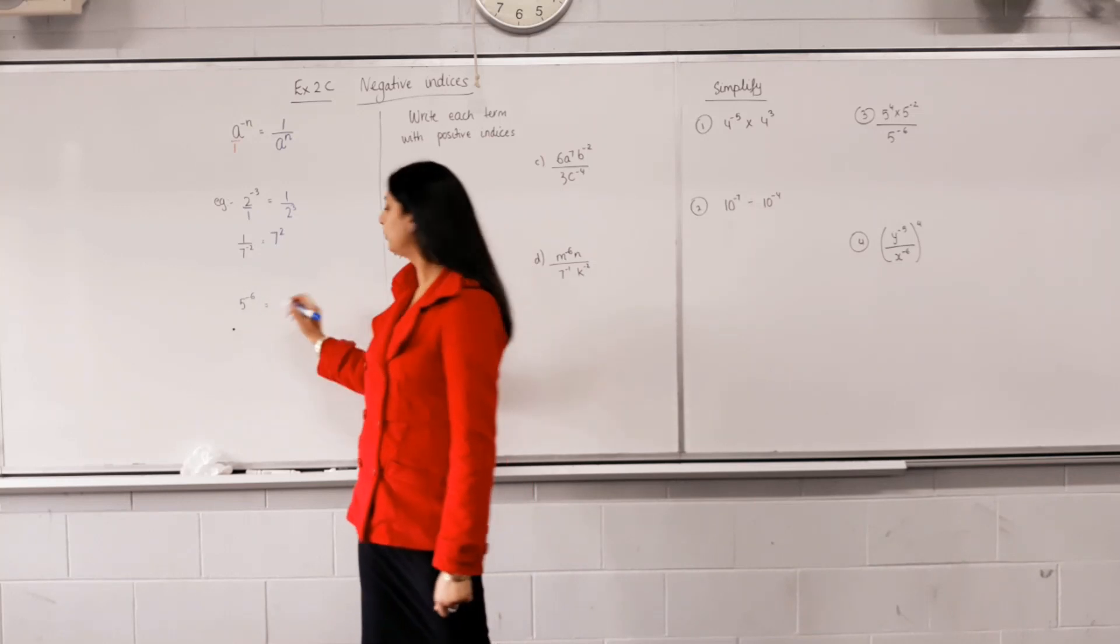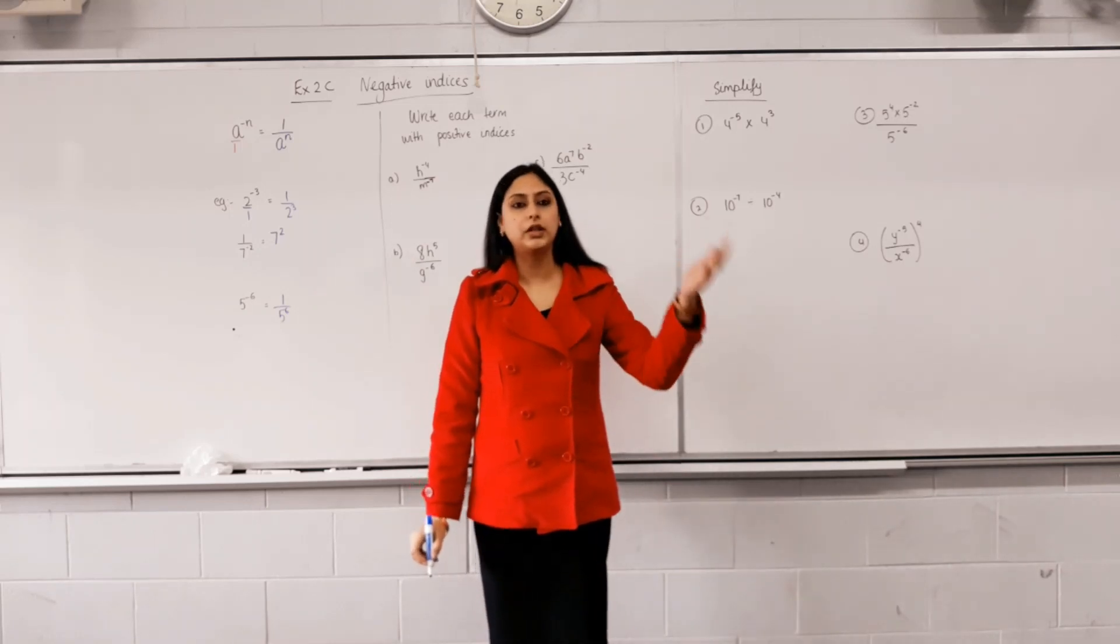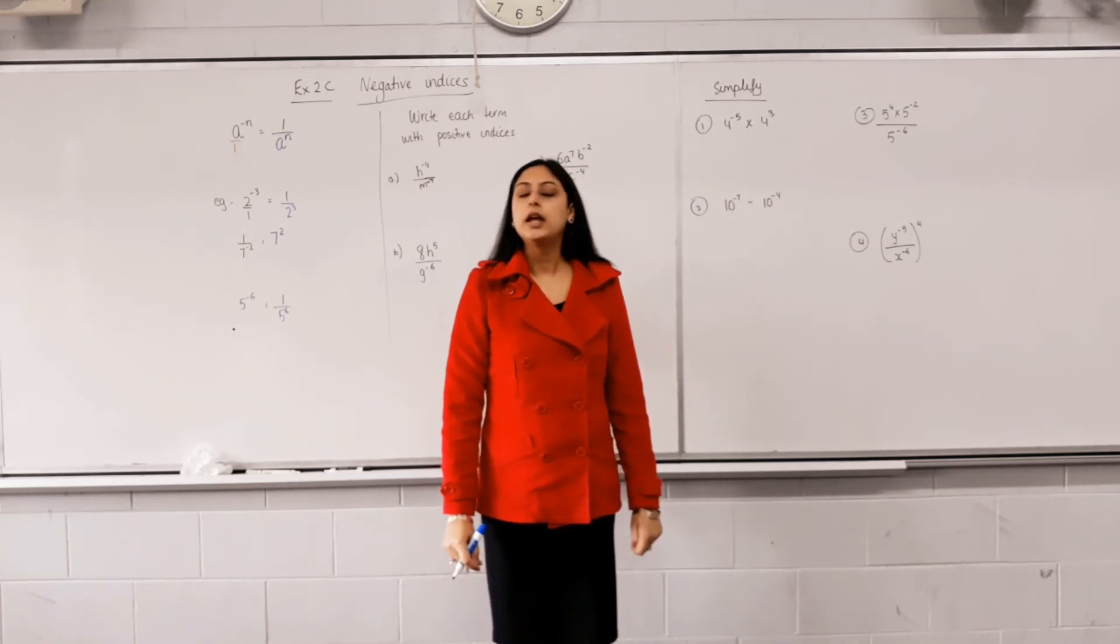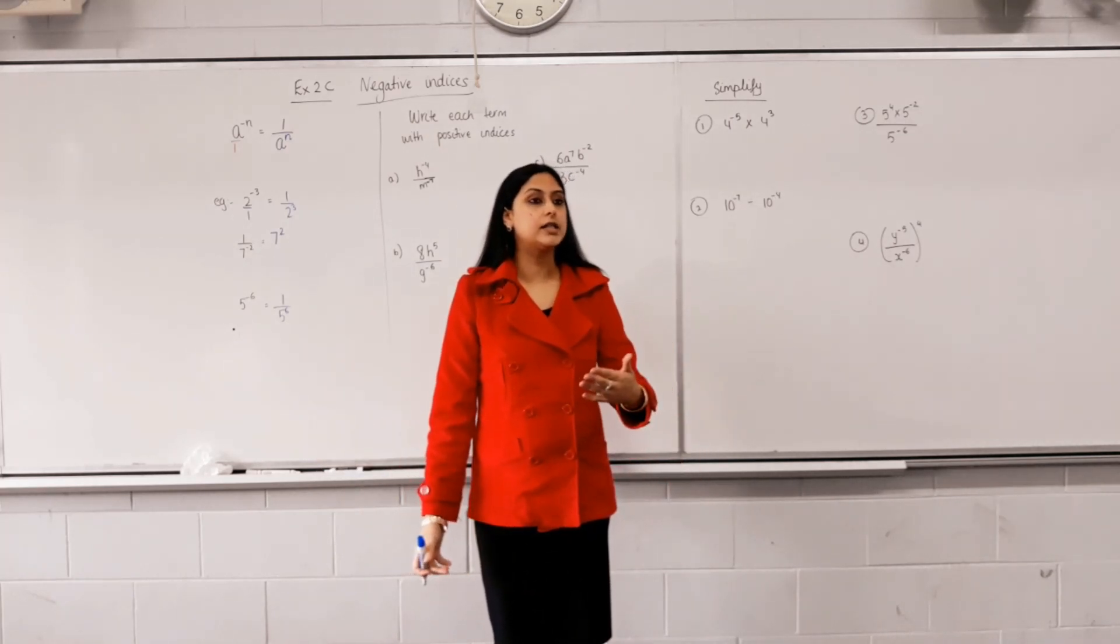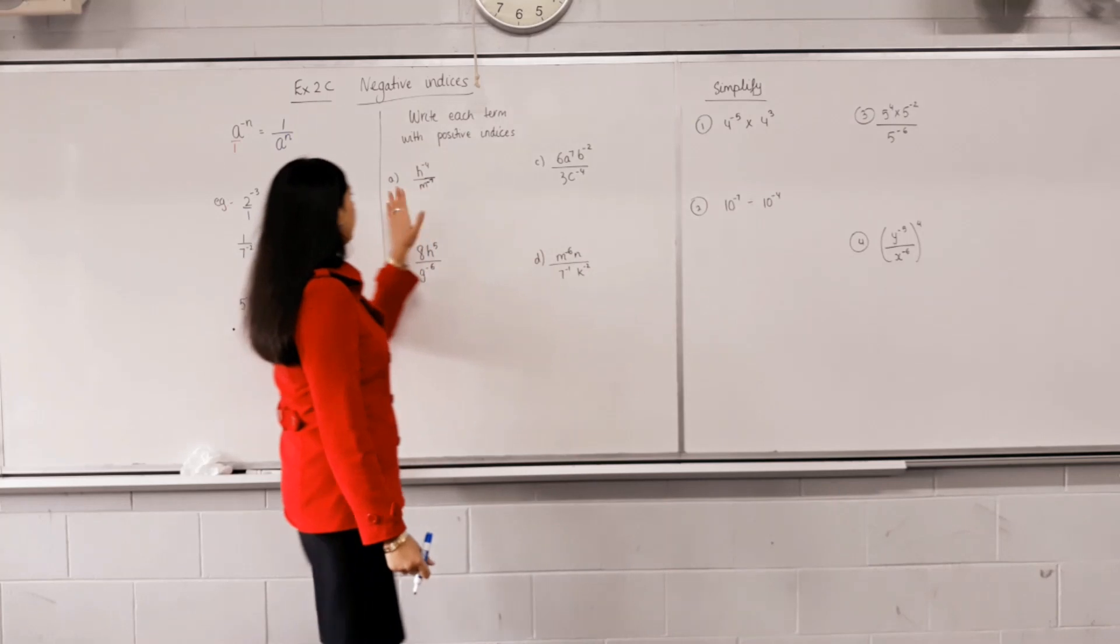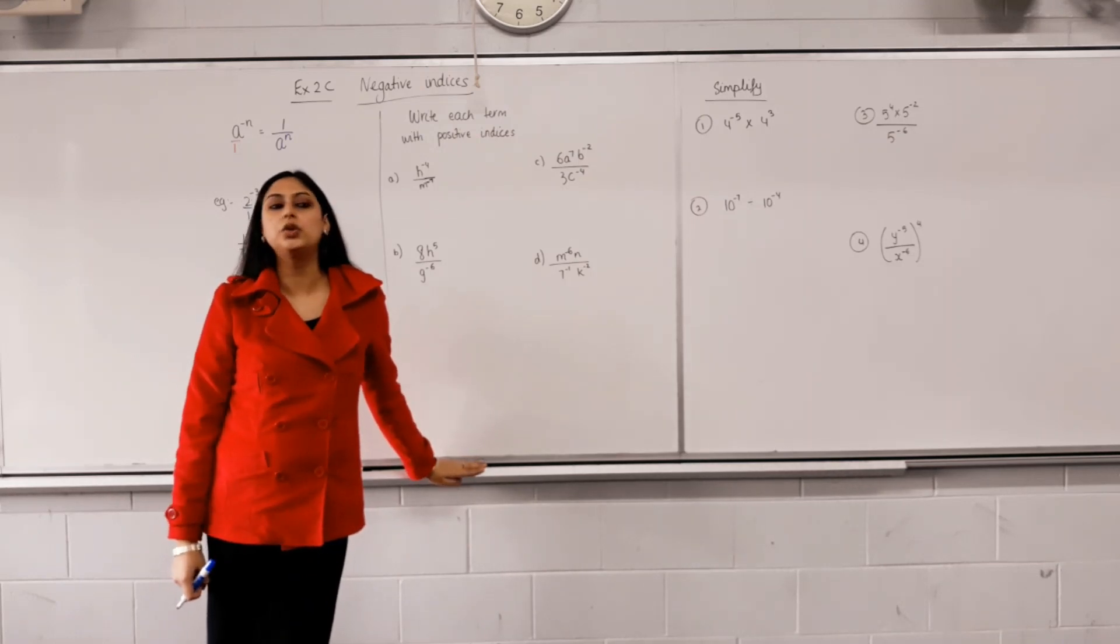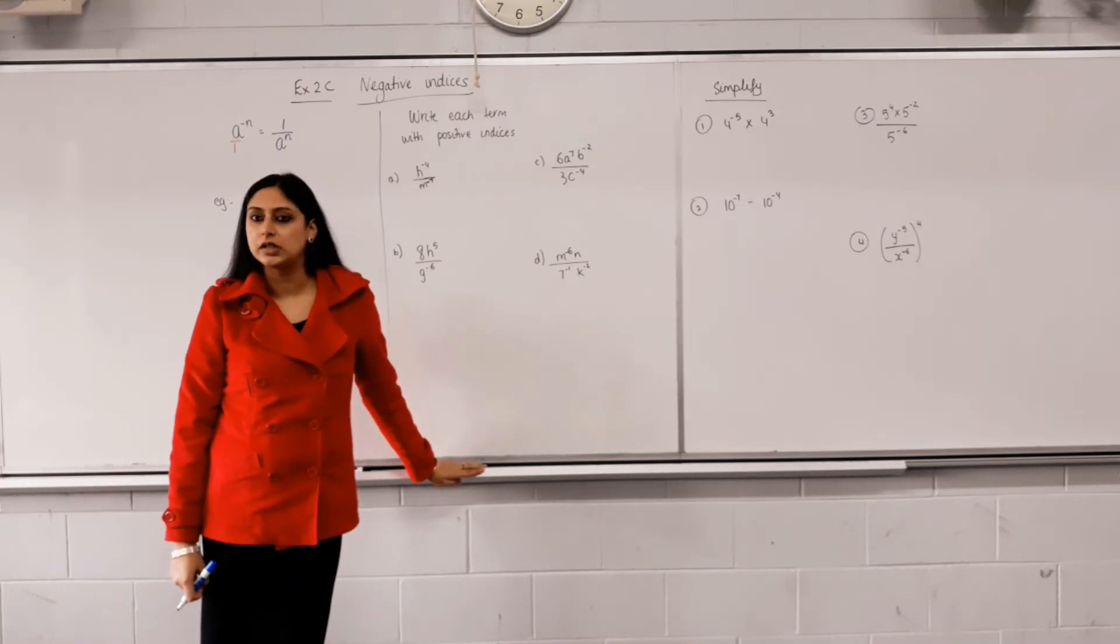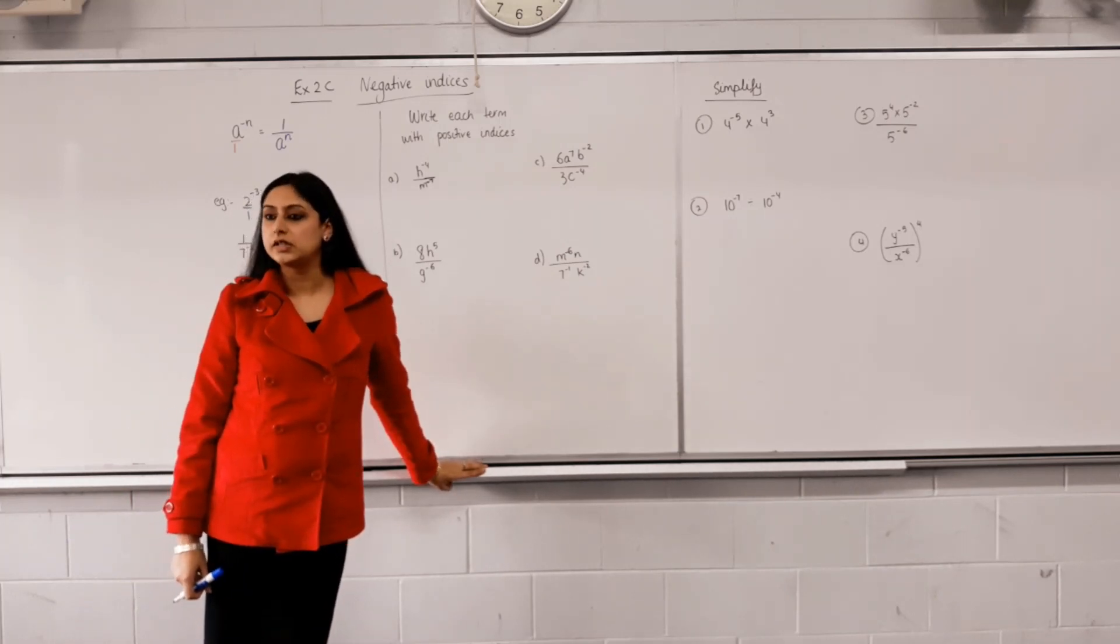Now 7 is at the bottom, you want to make its power positive so it will go to the top. Does that make sense? 5 will go to the bottom. Does that make sense? So it doesn't matter where you are, whether you are at the top or at the bottom, you just cross that line and the power will swap the sign. Is this easy? Nothing else changes, all index laws that we learnt last lesson still work. It just in the final answer you must cross the border and become a positive person, okay?